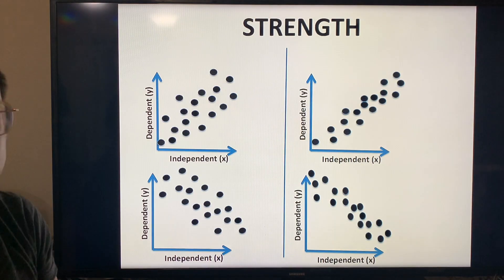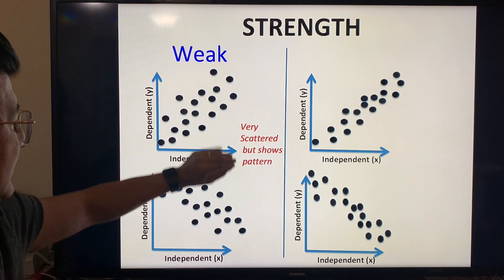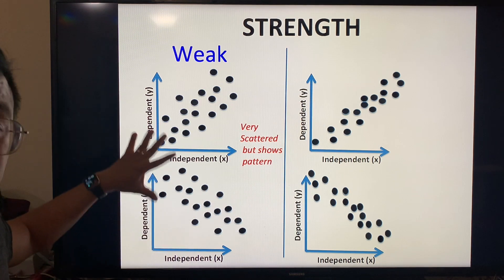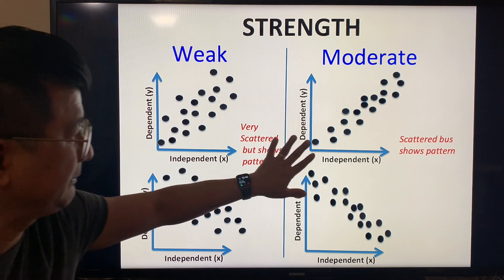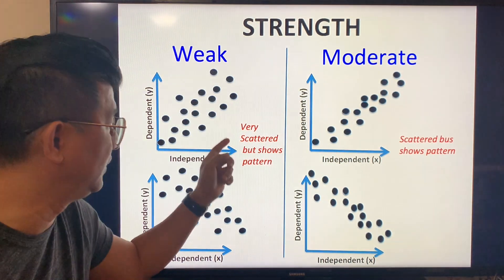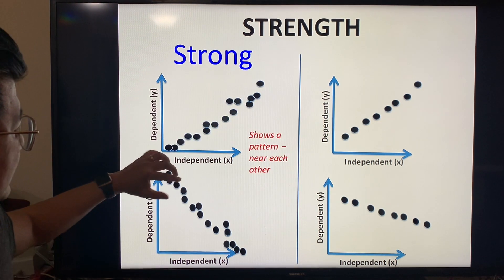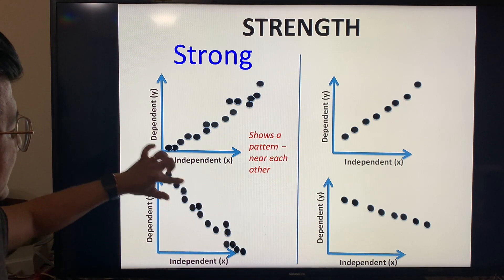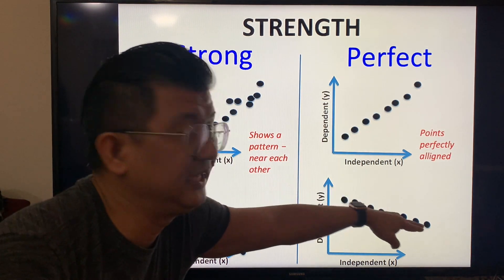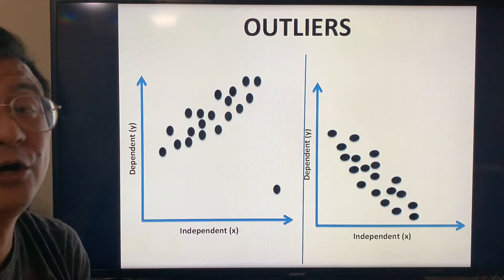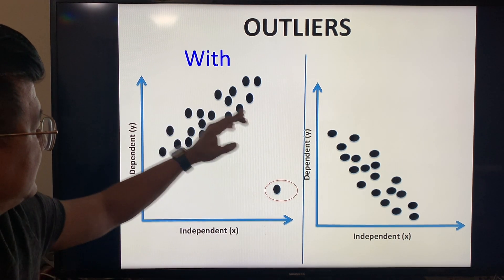Strength can be weak — points are not close to each other and very scattered, but still show a pattern. Moderate means scattered but showing a pattern, and closer together than the weak ones. Strong means the points are near each other and clearly show a pattern. Perfect means the points are perfectly aligned in a straight line.